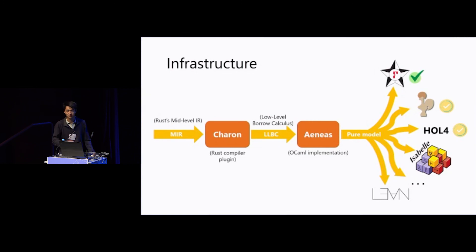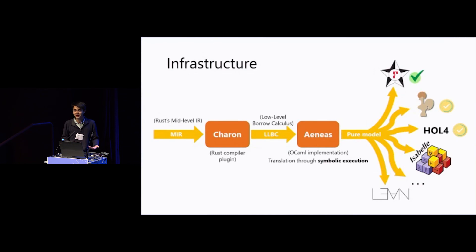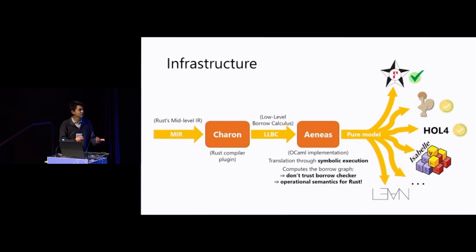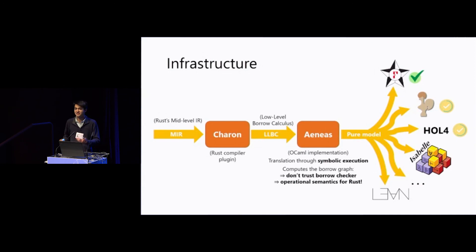The translation itself works through a form of symbolic execution; all details are in the paper. To make it work, at every point in a function we need to compute what we call the borrow graph — who borrows what from whom. Because of this we perform lifetime inference and check that borrows are correctly used, which means we don't need to trust the borrow checker. Along the way we also had to develop operational semantics for Rust and its borrow mechanism, which is another contribution of the paper.